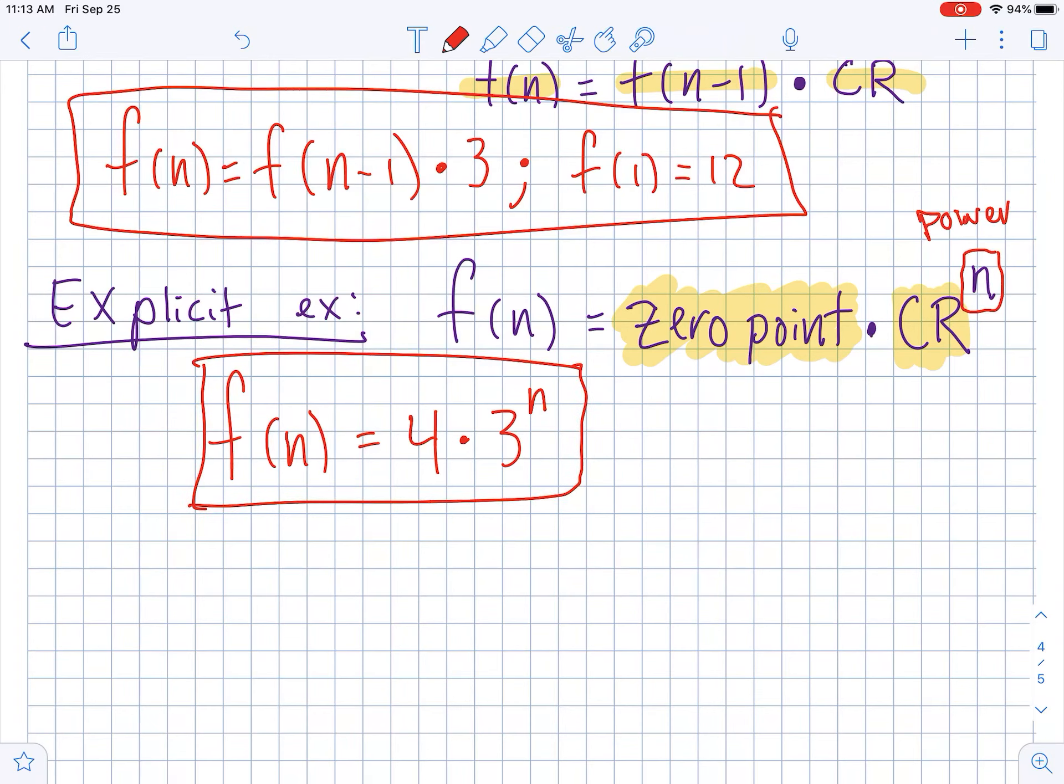You don't need a first point or anything like that with an explicit. That's why in general explicits are actually kind of nicer to work with because they require less. To find the tenth term in that sequence, you would just need to replace this with a 10 and then do it on a calculator. It'd be a very large number. All right, guys, that's all I got for these.